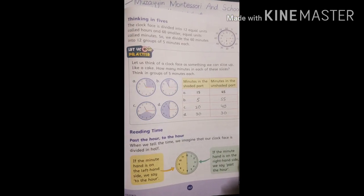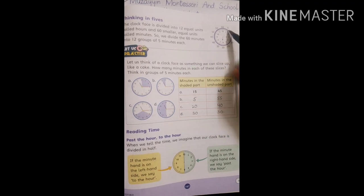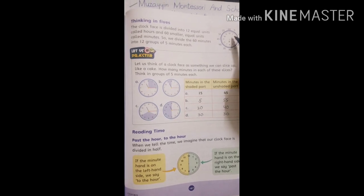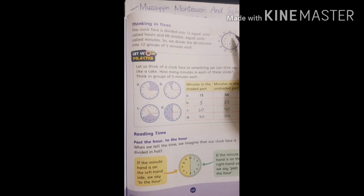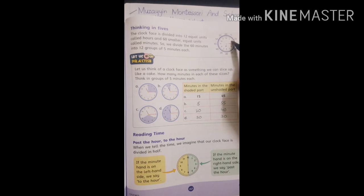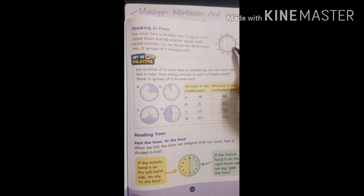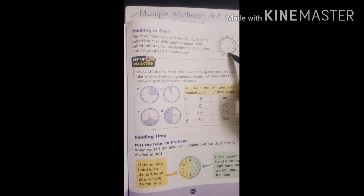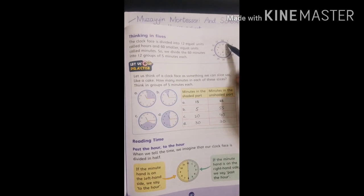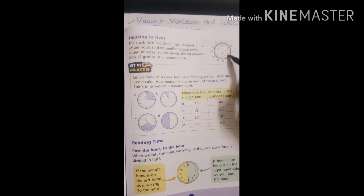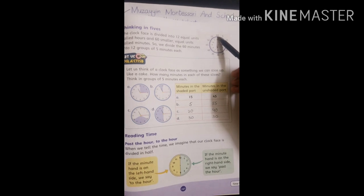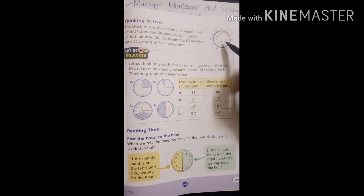Next topic is thinking in 5s. The clock face is divided into 12 equal units called hours. Each unit between numbers represents 5 minutes. If we count in 5-minute increments, this will be 60 minutes. We divide 60 minutes into 12 groups of 5 minutes each.